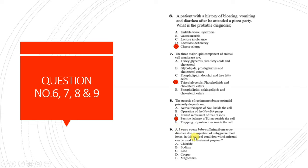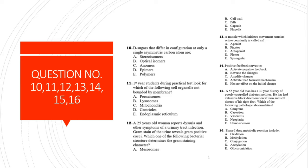Question 9: A 5-year-old boy with acute diarrhea due to ingestion of unhygienic food - which electrolyte can be used for treatment? The correct option is B - sodium. Sodium is given to a diarrhea patient to address dehydration caused by diarrhea.